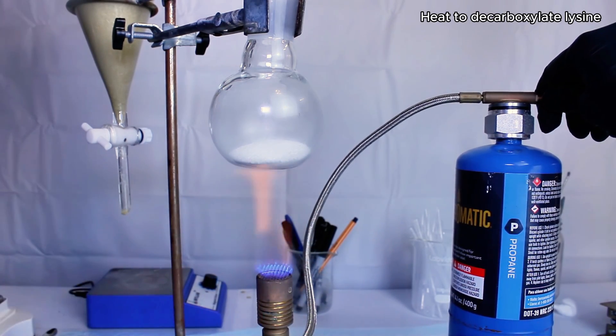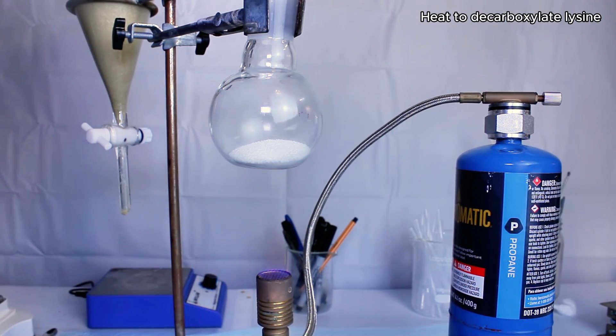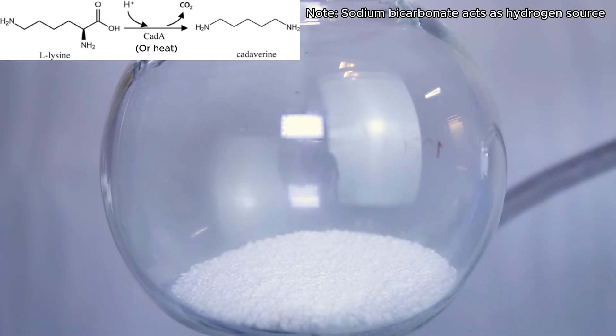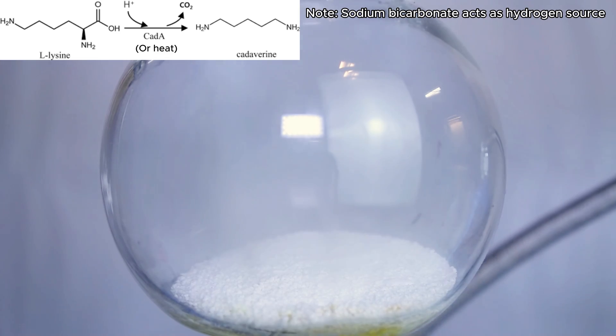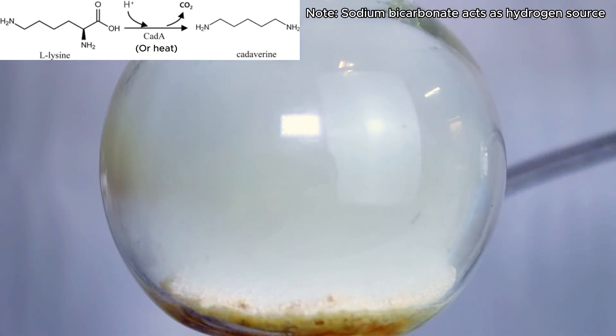Now at this point, all I have to do is heat my flask over a Bunsen burner to start the chemical reaction. What's happening here is called a thermal decarboxylation, which is a type of reaction that happens when something is heated and gives off carbon dioxide. In this case, the carboxyl group on the L-lysine molecule is breaking away and resulting in cadaverine.